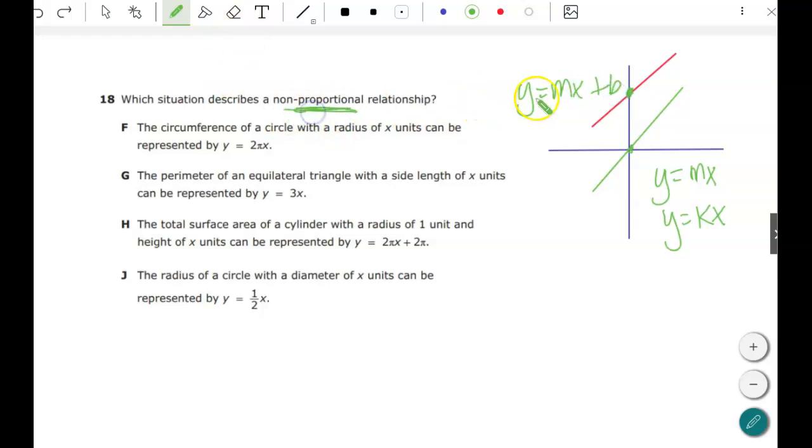So we're looking for non-proportional, so you've got to think is there something being added or subtracted. Let's look at it. The first one, circumference of a circle with a radius x units can be represented by y equals 2 pi x. There's no plus or minus so that can't be it. Look at this one, same thing there's not a plus or minus anything so that's going to go through that origin. But look here, plus. So it is H. This one does not have the plus or minus so that's proportional again.